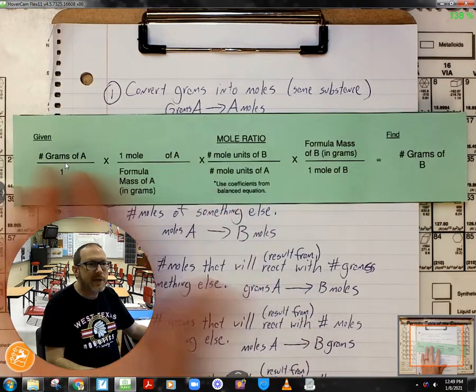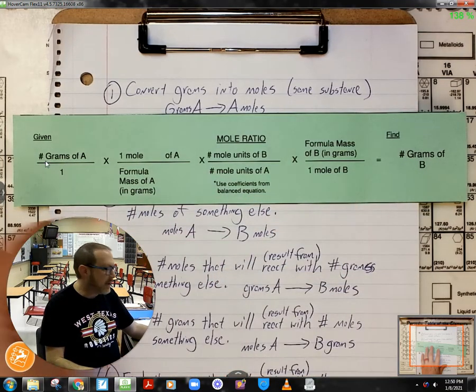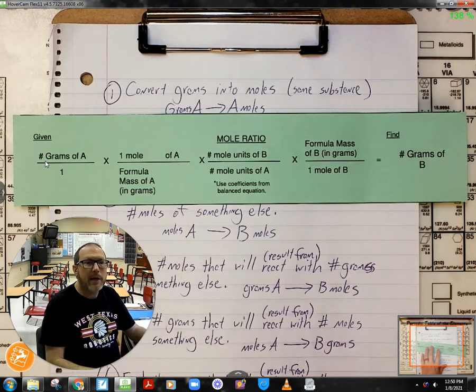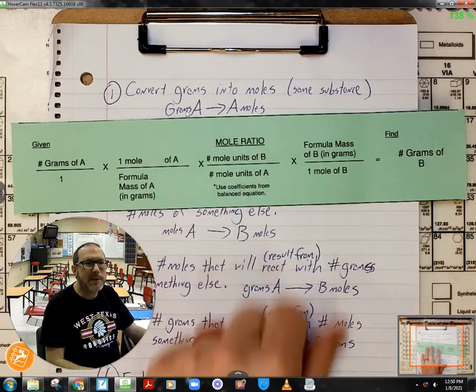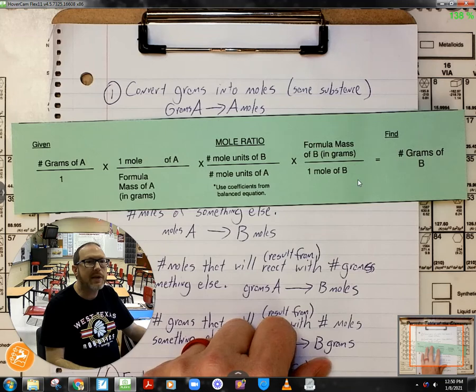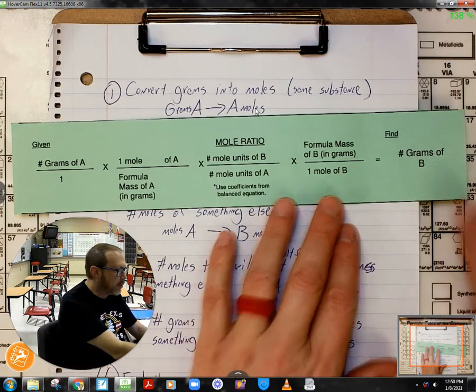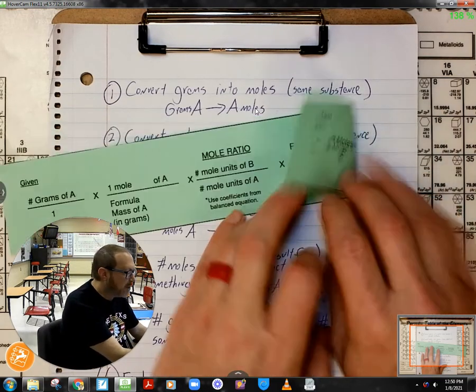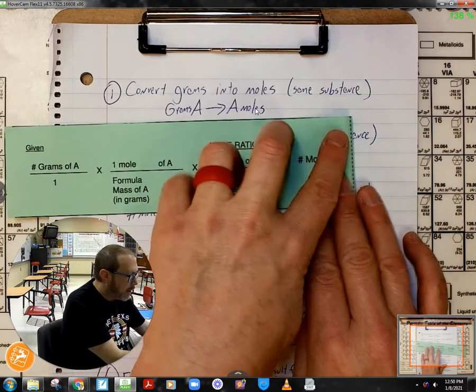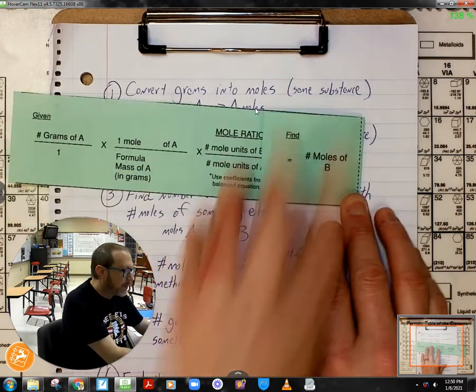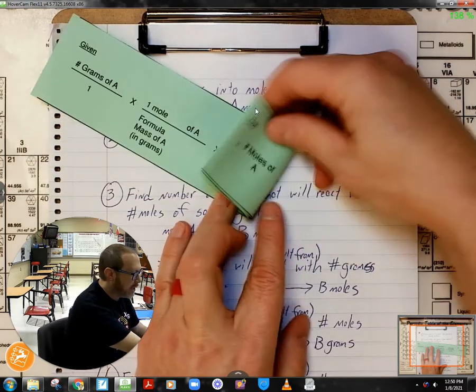What I've got on this side of the strip is I've got A and B. So long as you're working with the same substance, you're going to want to take this and fold it in such a way where you're given the grams of your substance and you're trying to find moles of the same substance. So the way you do that is by folding this over on the dotted line on the back and then doing it again.